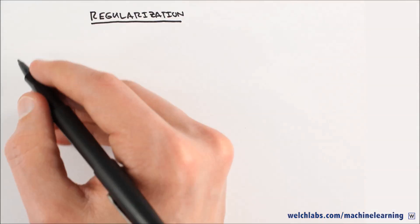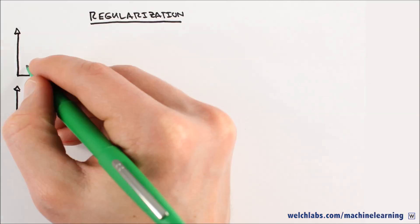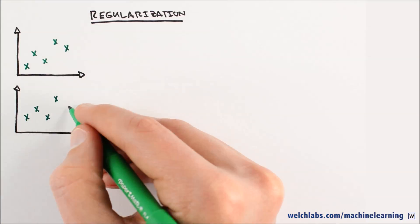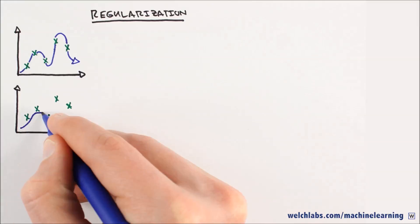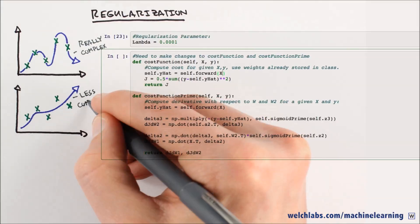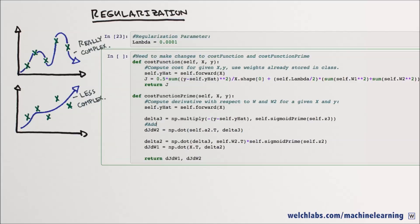Another popular and effective way to mitigate overfitting is to use a technique called regularization. One way to implement regularization is to add a term to our cost function that penalizes overly complex models. A simple but effective way to do this is to add together the square of the weights to our cost function. This way, models with larger magnitudes of weights cost more. We'll need to normalize the other part of our cost function to ensure that our ratio of the two error terms does not change with respect to the number of examples.